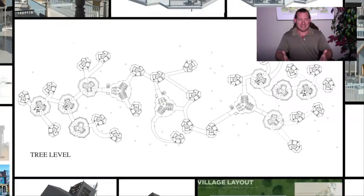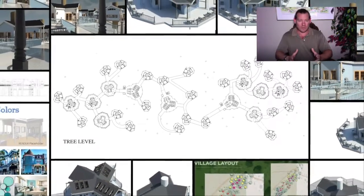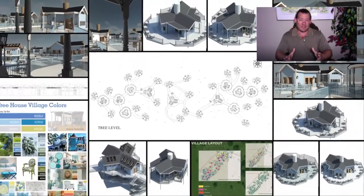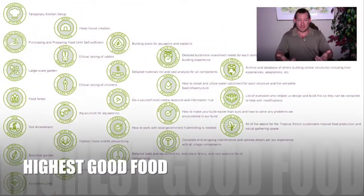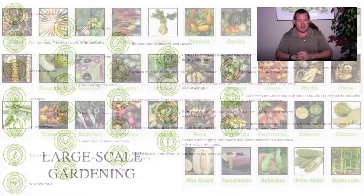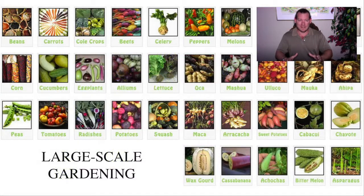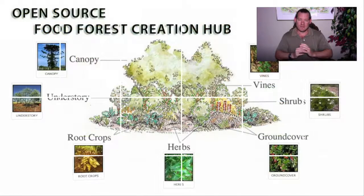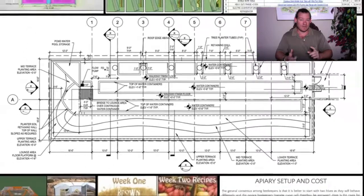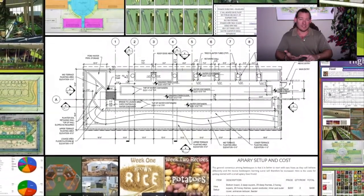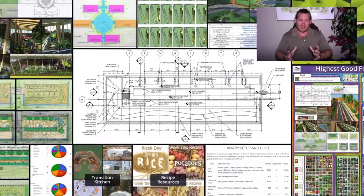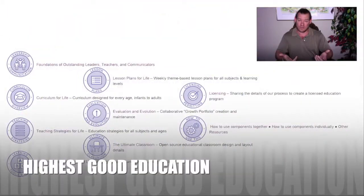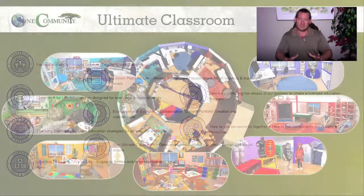The more people that come and visit and experience One Community, the more One Community prospers and thrives. The more people are having fun, living, and enjoying the experience and sharing it, the more One Community prospers. The more sustainable One Community is, the more it prospers because it further lowers our overhead. The model is simple: build sustainable infrastructure so that you don't have energy bills, food bills, housing bills, or education bills. Create a fulfilled living model, operate it as an ecotourism destination that generates revenue by sharing and marketing everything that we do, because it's all open source and free shared.